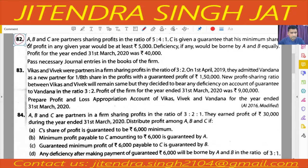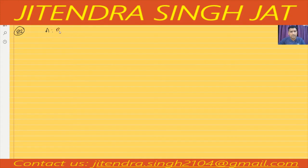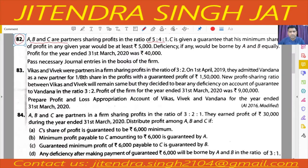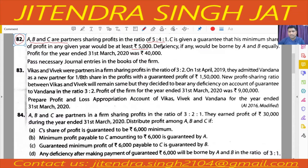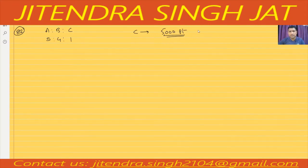Question number 82. A, B, and C are partners sharing profits in the ratio of 5:4:1. C is given a guarantee that the minimum share of profit in any given year would be at least ₹5,000. So this guarantee is given to C of ₹5,000 — C will get at least ₹5,000, not less than ₹5,000 in any year. Deficiency, if any, would be borne by A and B equally, meaning in a 1:1 ratio.